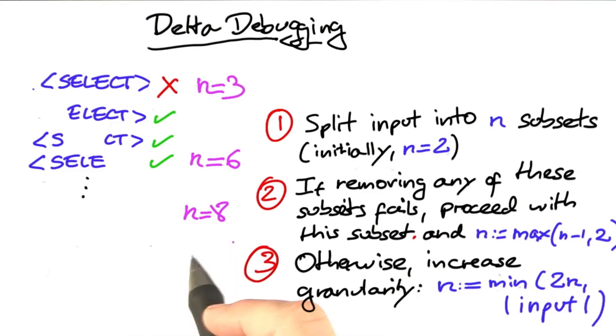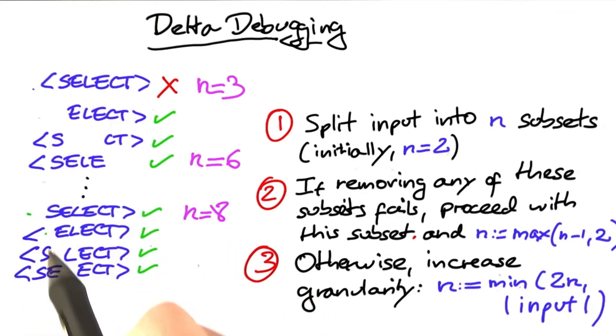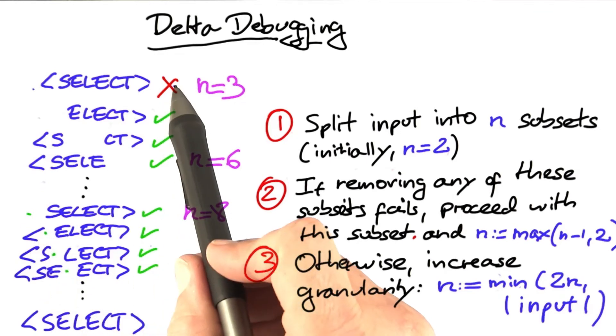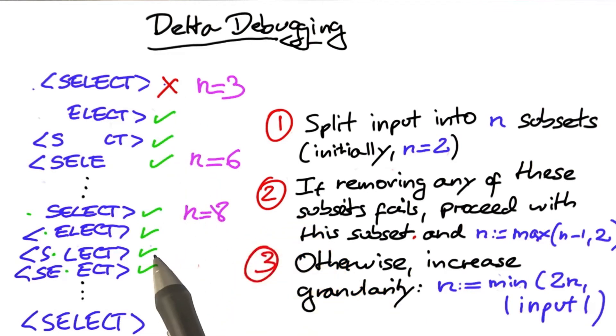And this is the final stage of delta debugging, where it tries to remove one character after another. But all of these removals result in passing test cases. So what we get in the end is this very string, select, and we have now shown that every single character in here is relevant because removing it changes the outcome of a test from fail to pass.